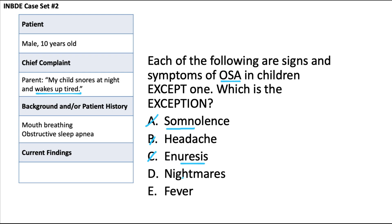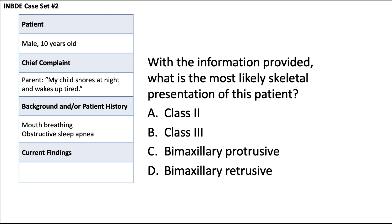Nightmares are a manifestation of parasomnia and are also more likely to occur alongside OSA. Fever, however, is a temporary systemic increase in body temperature and is not related to poor sleep or OSA — making it the outlier. The answer here is E.